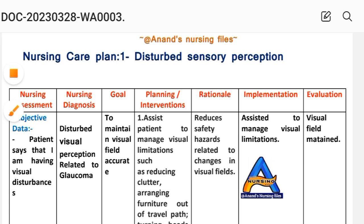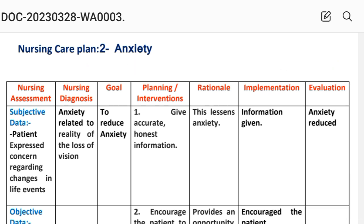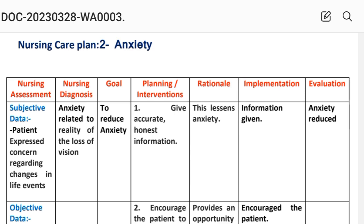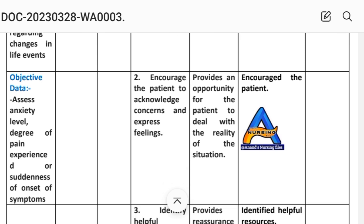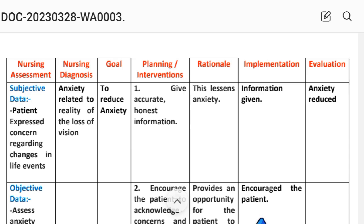Nursing Care Plan Number 2: Anxiety. Nursing assessment — subjective data: patient expresses concern regarding changes in a life event. Objective data: assess anxiety level, degree of pain experienced, and suddenness of onset of symptoms. Nursing diagnosis: anxiety related to the reality of the loss of vision. Goal: to reduce anxiety.